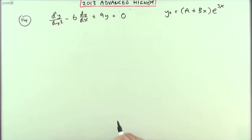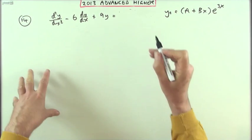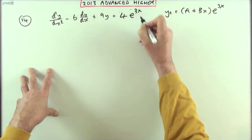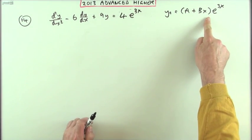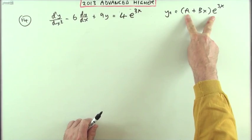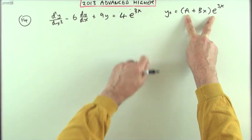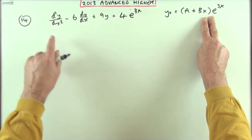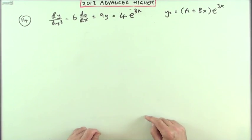That was the homogeneous equation. I was actually wanting to solve it equal to 4e^(3x). Straight away, there's a clash, because if I put in e^(3x), the whole thing will come to 0. If I put in xe^(3x), the whole thing will come to 0, because those were solutions of the homogeneous equation.